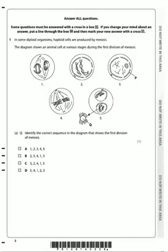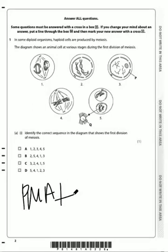Just like mitosis, meiosis will also undergo PMAT — prophase, metaphase, anaphase, and telophase. In meiosis you will have prophase 1, metaphase 1, anaphase 1, telophase 1, and then back again to prophase 2, metaphase 2, anaphase 2, and telophase 2.